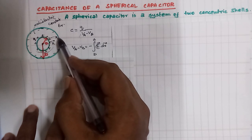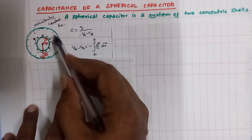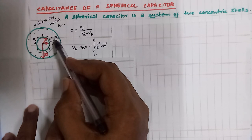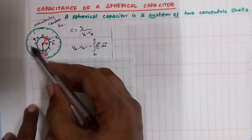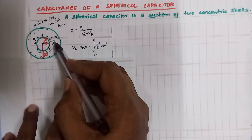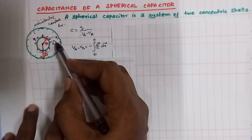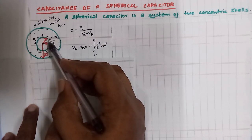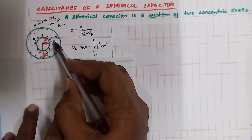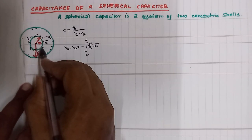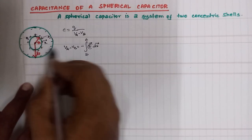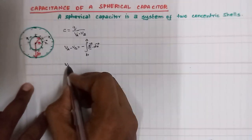There is an electric field that belongs to the outer shell. For the outer shell, we calculate the electric field inside the shell — it will be zero. The electric field outside the outer shell is also zero. So, what is the electric field for the inner shell? If you have a shell, what is the general form?